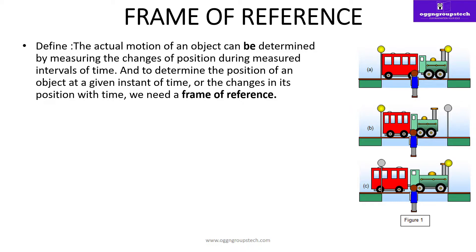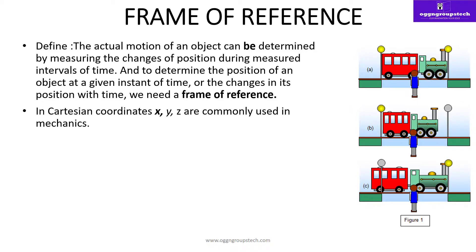تو اس concept کو ہم لوگ frame of reference بولتے ہیں۔ جو آدمی train کے اندر ہے اس کا observation الگ ہے، اور جو آدمی train کے باہر ہے اس کا observation الگ ہے — اس طرح کی observations کو ہم frames of reference بولتے ہیں۔ The actual motion of an object can be determined by measuring the change of position during a measured interval of time, and to determine the position of an object we need a frame of reference.